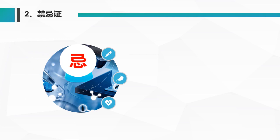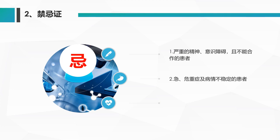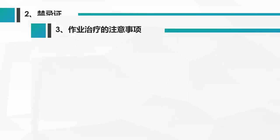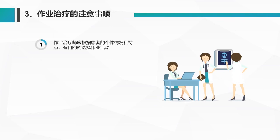有三种情况下严禁使用作业疗法：第一种，严重的精神和意识障碍、不能配合医生的患者；第二种，极重病人且情绪不稳定的患者；第三种，需要绝对休息的患者。作业疗法的注意事项：第一，作业治疗师应根据患者个体情况和特点，有目的地选择作业活动；第二，在选择时应与患者所处的环境相适应，要具有实用性。